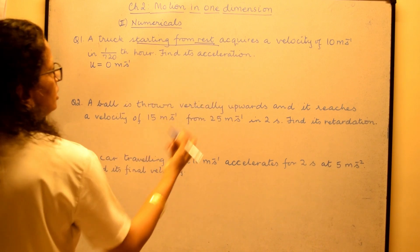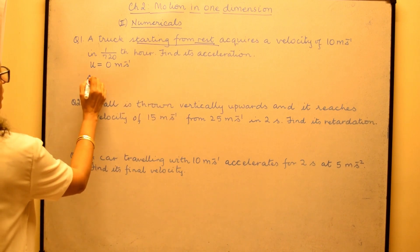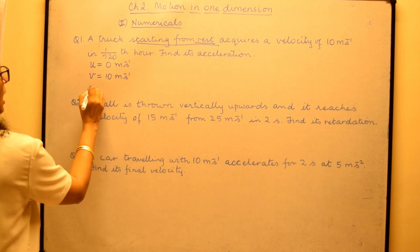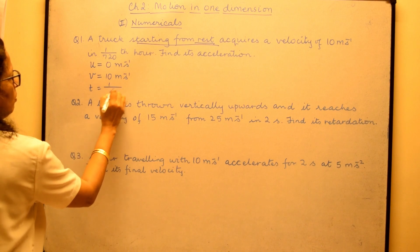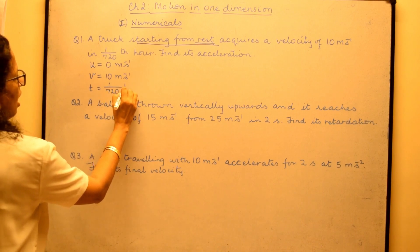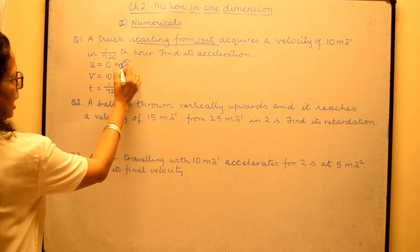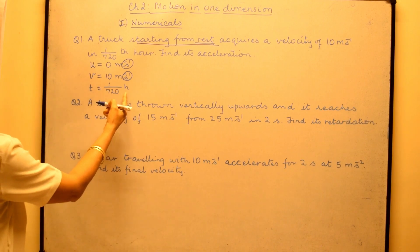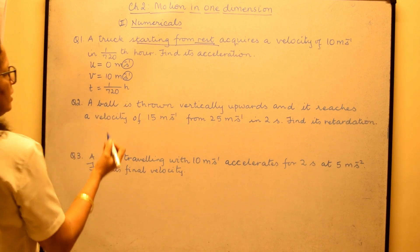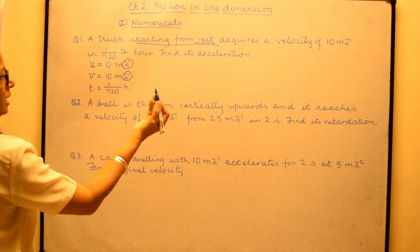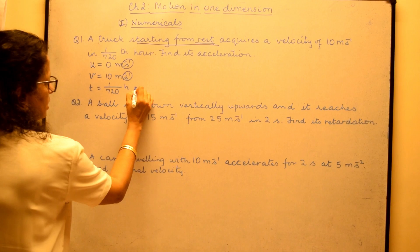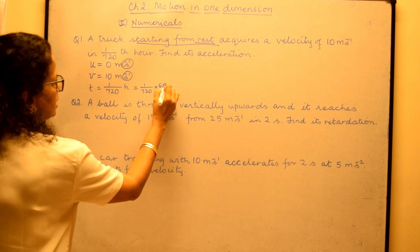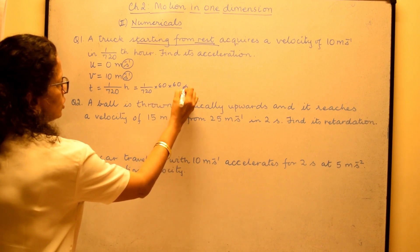Acquires a velocity of 10 meter per second which is after an interval. So that becomes final velocity which is 10 meter per second. And the time is given as 1 upon 720th of an hour. Now you will see here time is in second. Here also time is in second. But here the time has given in hours. So if it is 1 hour, we will say it has got 60 into 60 seconds. So if it is 1 upon 720, it will have 1 upon 720 multiplied by 60 times 60, those many seconds.